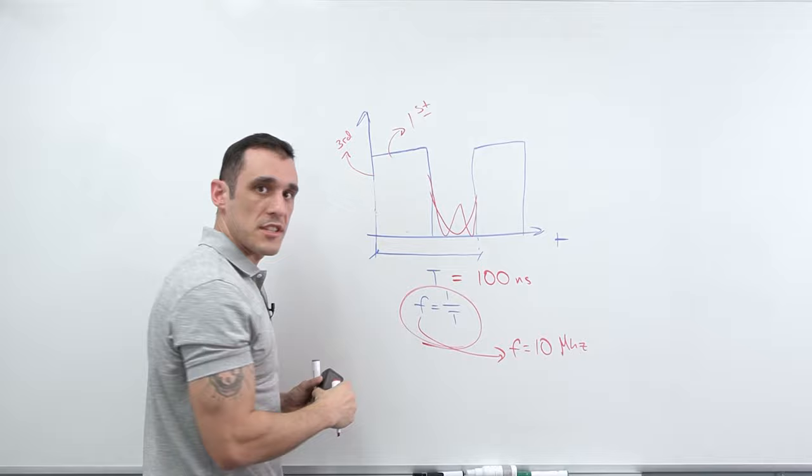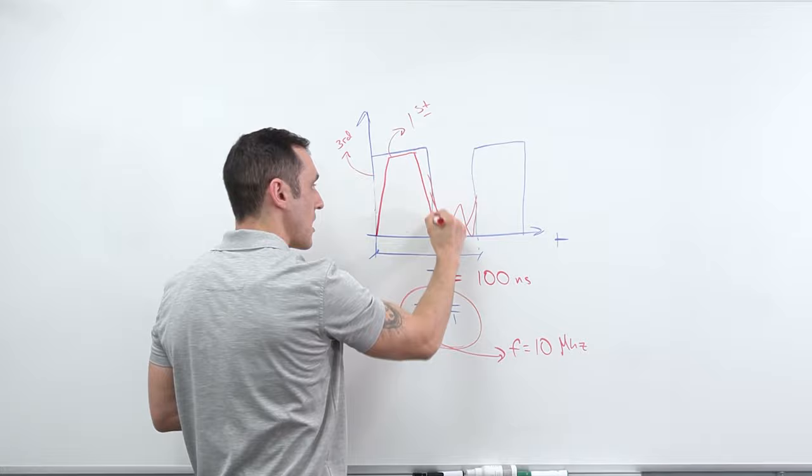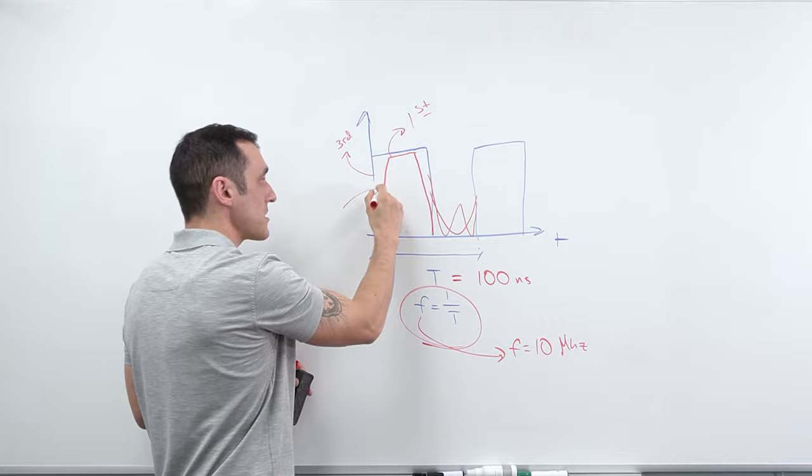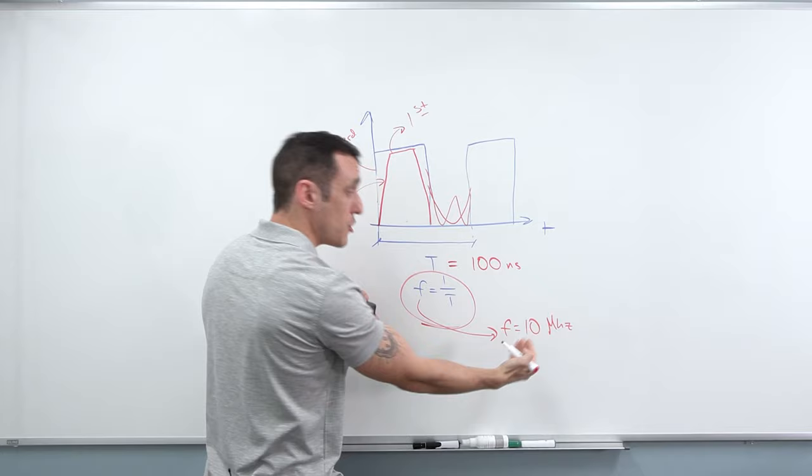Number one, the frequency content or the amplitudes associated with these different frequencies will change if I include a rise time here for this portion of the signal. So remember, this rise time is what determines where the frequency content is concentrated in the frequency domain. So this rise time is actually important.